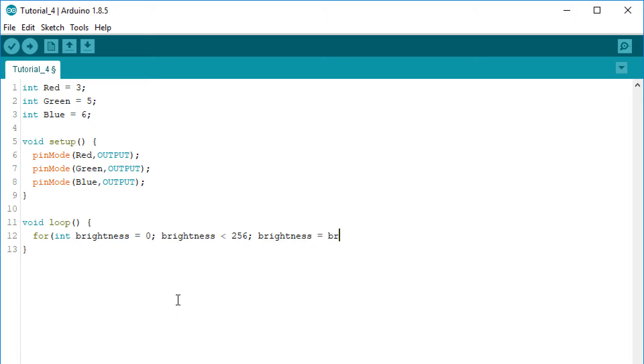Ok so we need a for loop. The first argument to our for loop is an integer brightness starting from 0 because we want the LED to start from the completely off state. The second argument is the condition. We want to stay in the loop while the looping variable is less than 256. The third argument is the rule. We want to increment the looping variable by 5 each cycle.